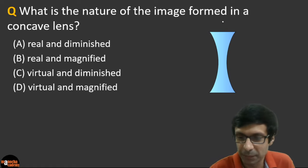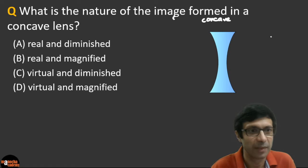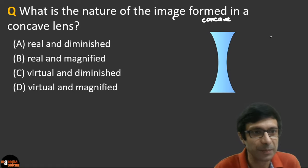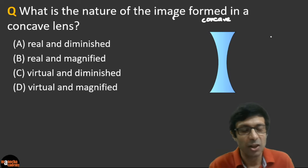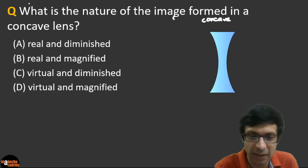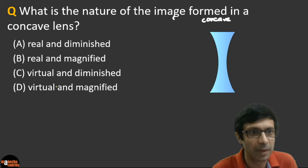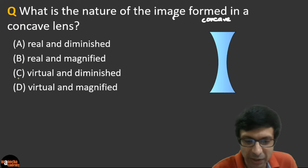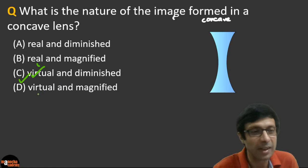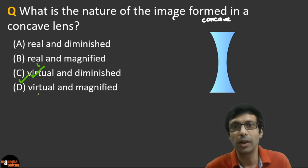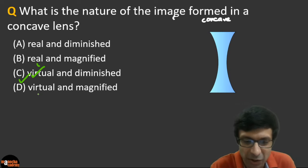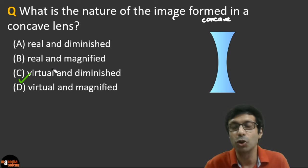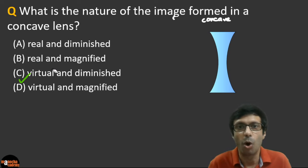The correct answer is C — a virtual and diminished image. Why is that? Because a concave lens always forms a virtual and diminished image. If you draw the ray diagram, here's our object. The light ray is going to hit the lens and diverge out, and the other ray goes straight through the optical center.